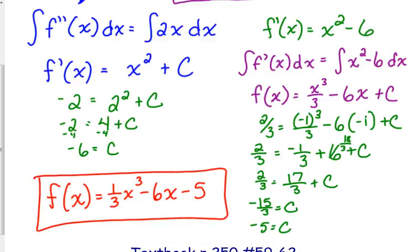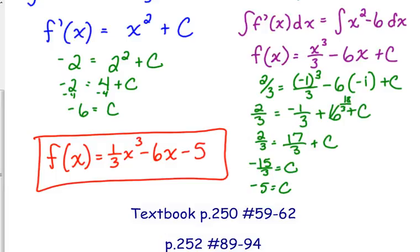So, really, it's the same thing we did yesterday. We just have to solve for C twice. We've got to do it in the middle before we can anti-differentiate again to get to the original, and then we have to do it again to find C for the original function. So here are a few problems to practice with that.